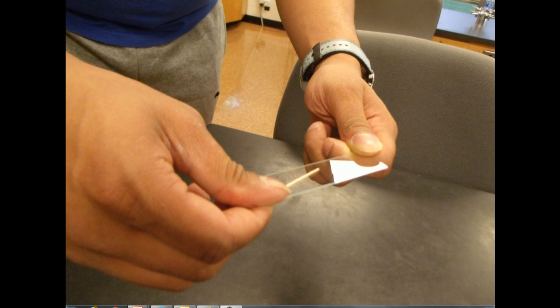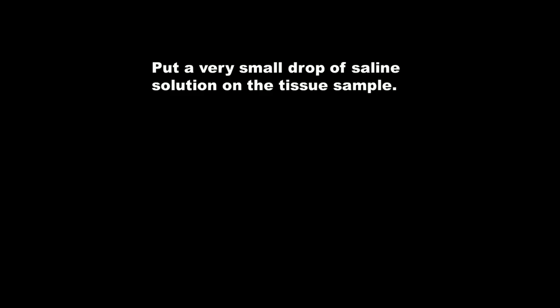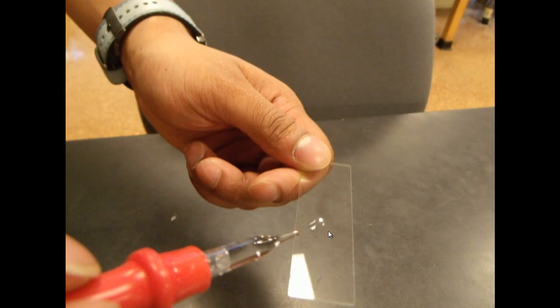You're going to place the sample by scraping it gently onto the slide. He'll now put a very small drop of saline solution on the tissue sample like this, just a tiny amount.